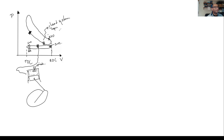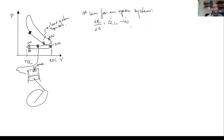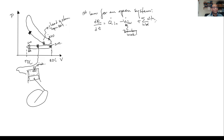The first law for an open system is written as a rate: dE/dt equals Q-dot in minus the rate of work done by the control volume. In this case that work is boundary work — the work from the changing size of the system, which is the work going out through the piston. Then we add the sum over all inlets of m-dot times h in, minus the sum over all outlets of m-dot out times h out, where h is enthalpy per unit mass.